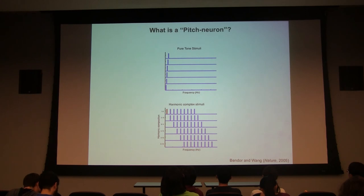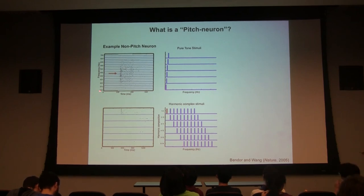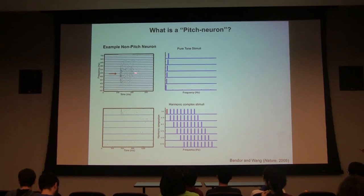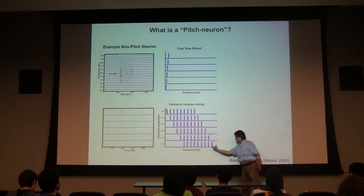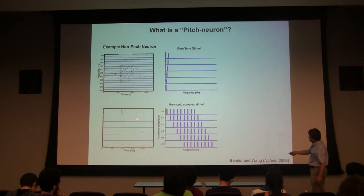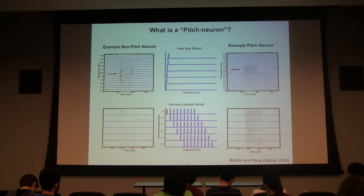The pitch neuron responds to a pure tone at its sensitive frequency, and also to a harmonic complex missing the fundamental — the neuron responds as if at the extracted pitch. If you take the three harmonic components and give them one at a time, there is no response until they are combined. These pitch neurons are located in a specific area — about one millimeter in size — just anterior to the primary auditory cortex. Finding them is almost like finding a needle in a haystack.